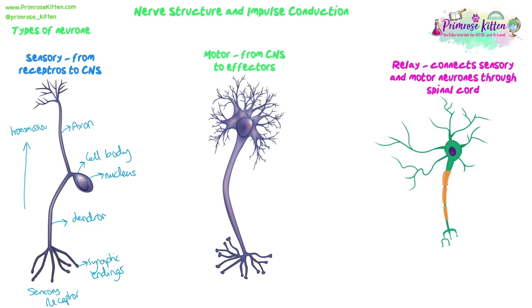We've got an axon and a dendron here. The part that carries the impulse away from the cell body is called the axon. Up until the cell body, the impulse is moving towards the cell body, so that part counts as a dendron or an extended dendrite. The axon tends to be pretty short because you want to speed up the distance of transmitting the impulse from the cell body to the central nervous system, making that distance quite short and therefore the speed quite quick.